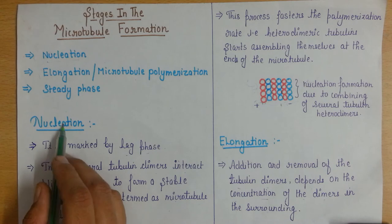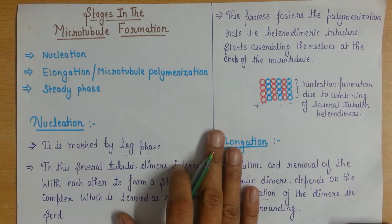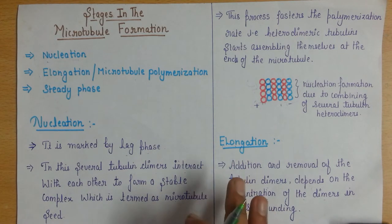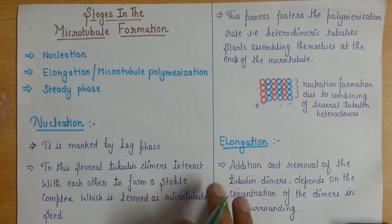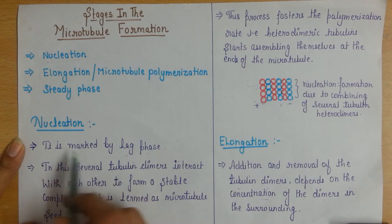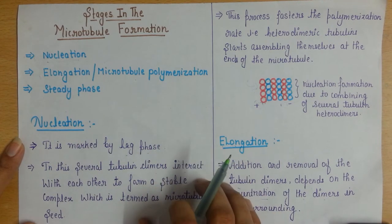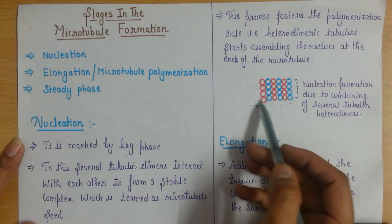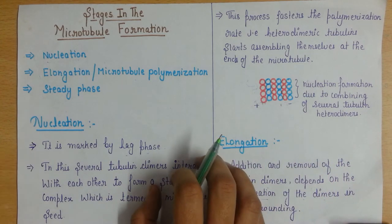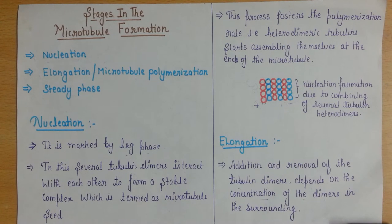What is happening in the nucleation phase? We all know that the microtubule is made of heterodimeric subunits, and these heterodimeric subunits are your alpha-beta tubulins. In the nucleation phase, some alpha-beta subunits, which are dimers, combine to make a small complex. The heterodimers don't just instantly start binding to form a microtubule right away.